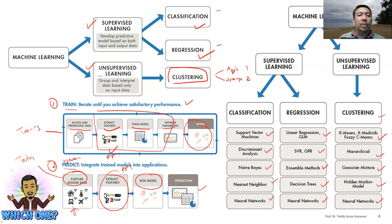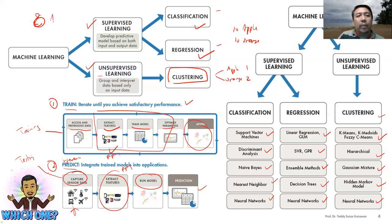For example, when you train with 10 apples and 10 oranges, then you put another one — another apple or another orange — you need to classify this new data. The classifier must determine whether it is apple or orange based on what it learned during training.